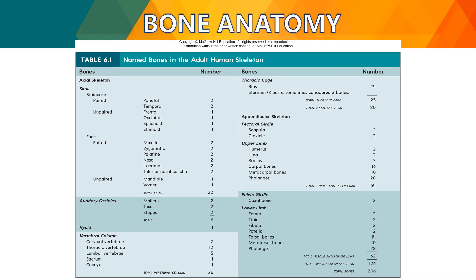There are around 206 bones in total in an adult human skeleton. Compared with a newborn, newborns have more bones because some haven't fused yet and haven't reached maximum growth. When fusion occurs for these bones, they become one, reducing the total count. Newborn bones are very flexible and must be handled with care as they are still developing and not yet fully hardened.